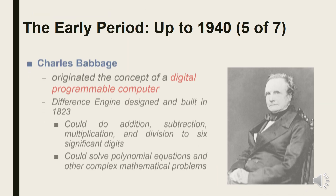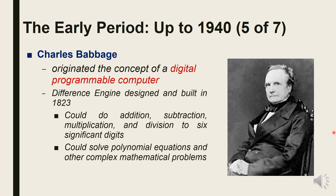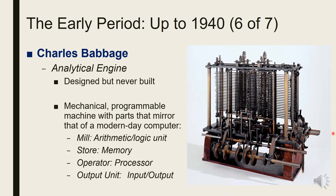Charles Babbage originated the concept of a digital programmable computer. The Difference Engine, designed and built in 1823, was an automatic mechanical calculator that could do addition, subtraction, multiplication, and division to six significant digits. It could also solve polynomial equations and other complex mathematical problems. The Analytical Engine was a proposed mechanical general-purpose computer by Charles Babbage, described as a mechanical programmable machine with parts that mirror our modern computer.